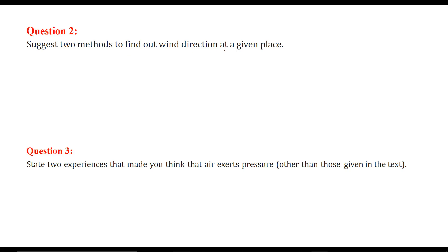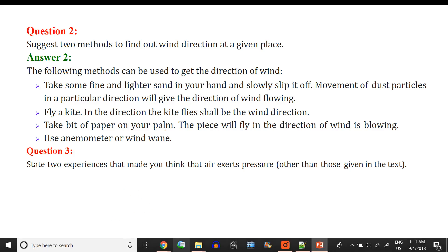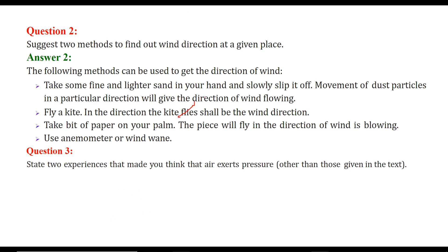There are a few methods to find out wind direction at a given place. First, you can take some sand in your hand and open your hand so it slips — you can see where the dust particles go, since they are very light. The wind will take them in a certain direction. You can also fly a kite — the direction in which the kite is flying is the wind direction.